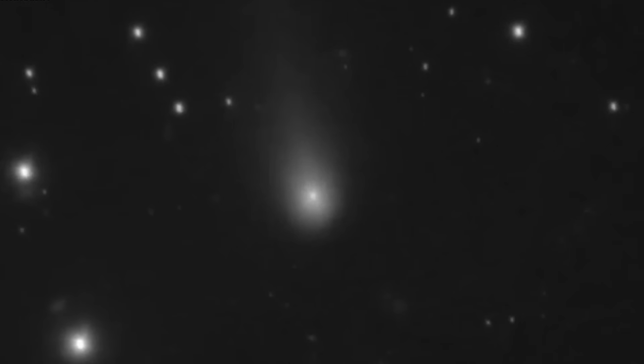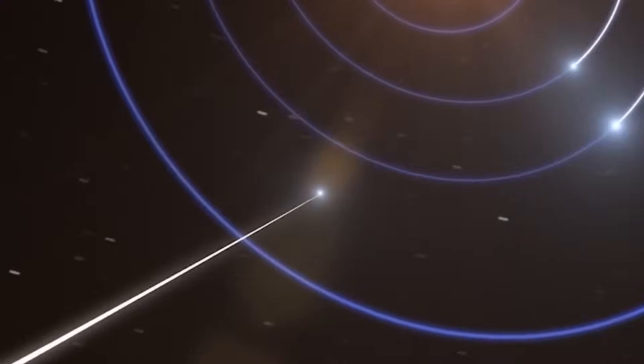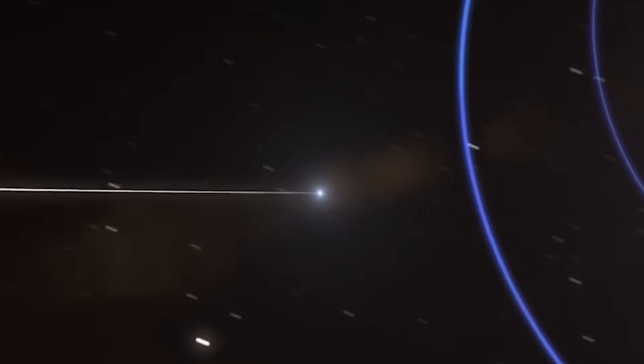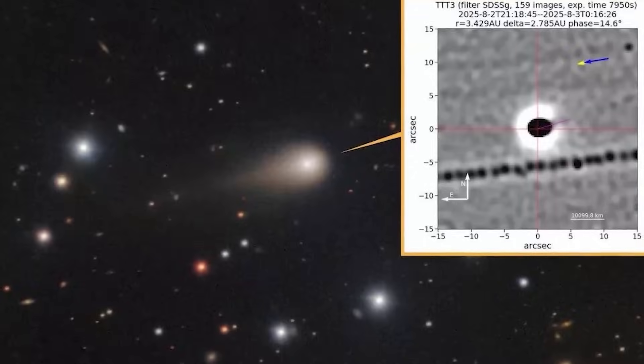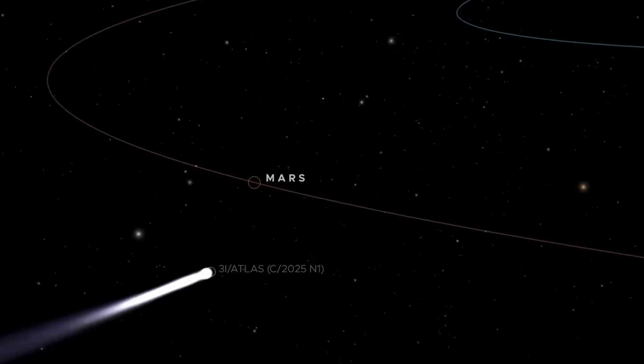Let me tell you what we're dealing with here. 3I Atlas is the third confirmed interstellar object ever detected passing through our solar system. That 3I designation tells you it came from beyond, somewhere out in the vast darkness between stars.